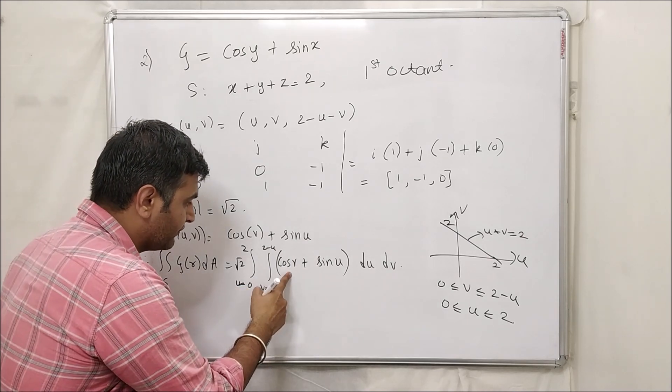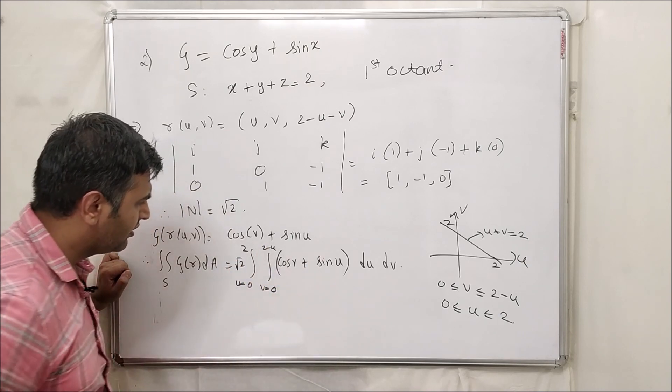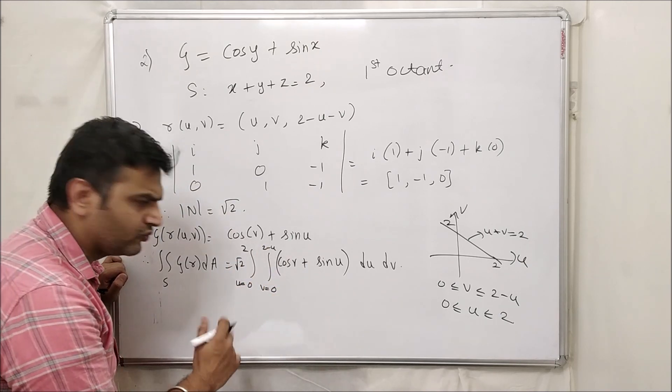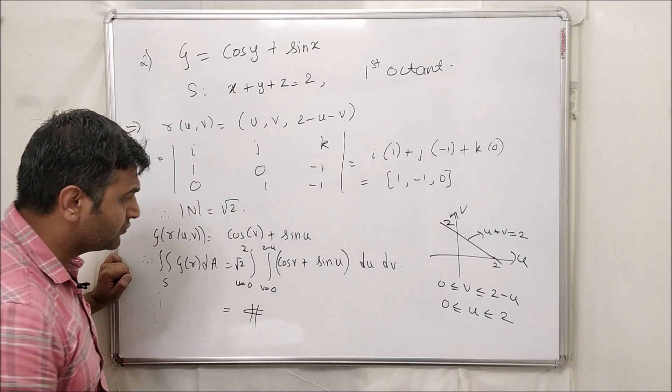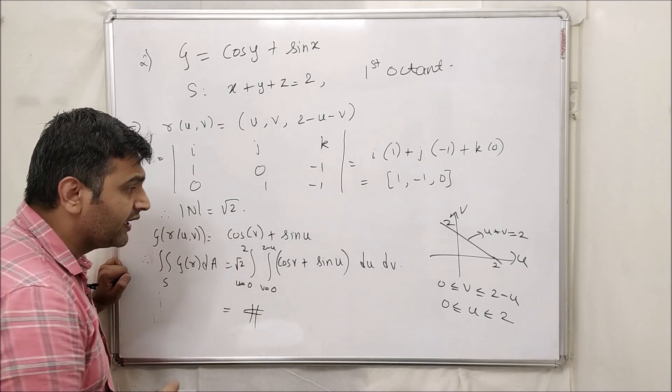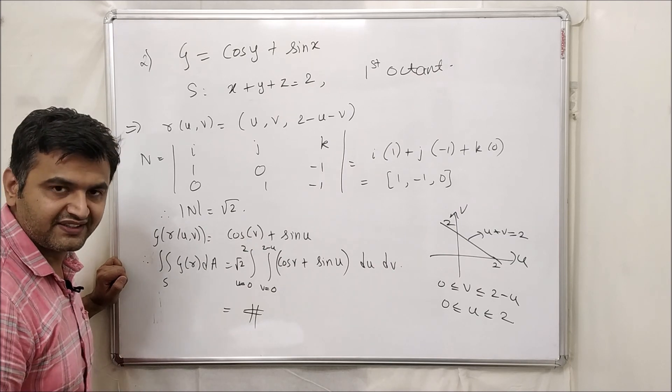And for this cos v, so minus sin v, so yeah, I think I will stop here. I won't do the calculation here. This is a doable calculation. So please solve this question again and tell me what is the answer in the comment section.